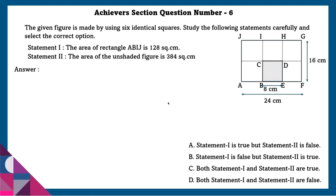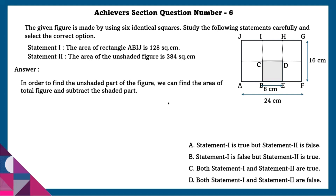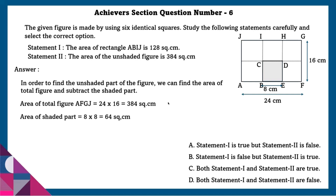Statement 2: the area of the unshaded figure is 384 square centimeters. Area of the total figure AFGJ is 24 × 16 = 384 square centimeters. Area of the shaded part is 18 × 8 = 64 square centimeters. Area of the unshaded figure is 384 minus 64, which equals 320 square centimeters. Hence statement 2 is false.